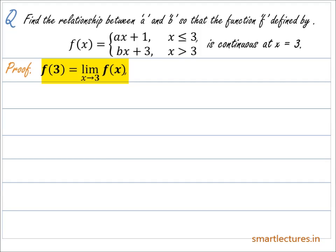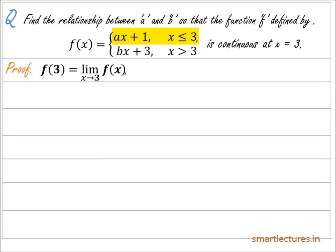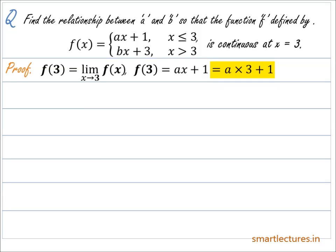Let's first find the value of f(3). As per the definition of the function, if x is less than or equal to 3, then f(x) = ax + 1. So f(3) = a×3 + 1, which equals 3a + 1.